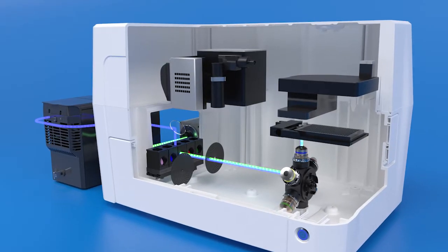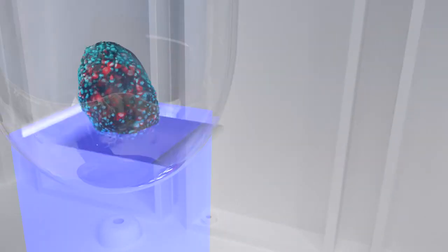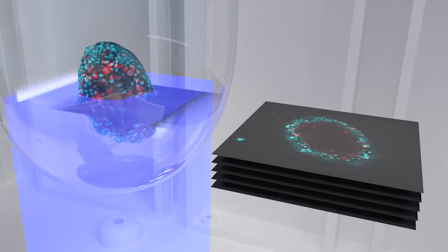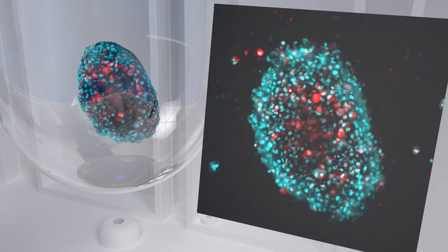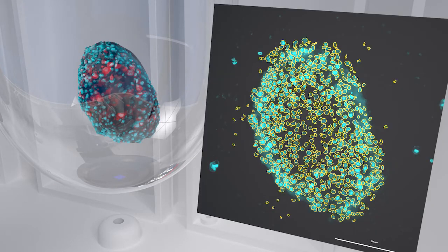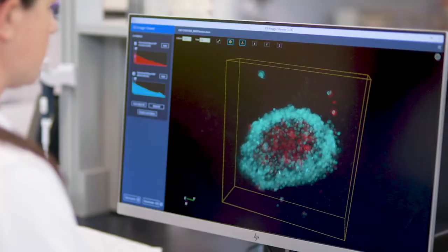For example, this common spinning disk confocal image processing workflow quantifies cells in a 3D spheroid. A Z-stack is captured. Then, Gen5 processes the stack of images to count individual cells in the spheroid. A 3D viewer is used to explore the sample in greater detail.